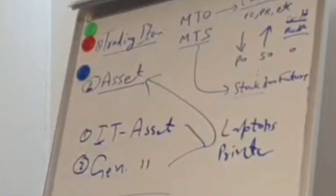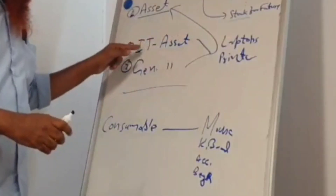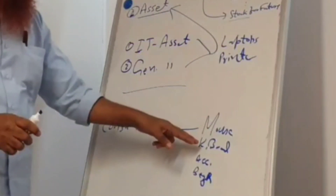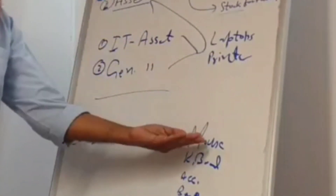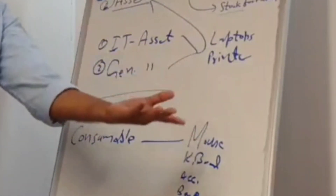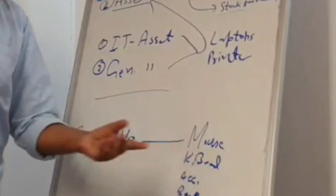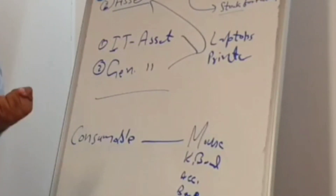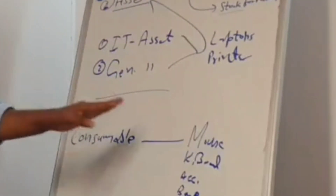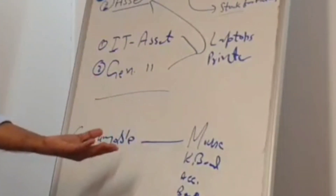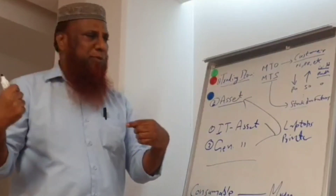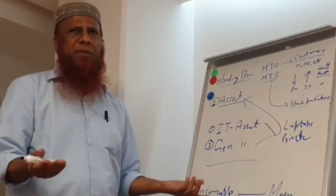Now consumable items — people say bring mouse, keyboard, accessories, wires, bags — we cannot put these under assets. These are consumable because the cost is small: maybe 10 riyal, 50 riyal, keyboard maybe 100 riyal. We have to understand what is consumable and what is a general asset, and distribute things accordingly. Small items like wires, cables, bags at 100–200 riyal are consumable.